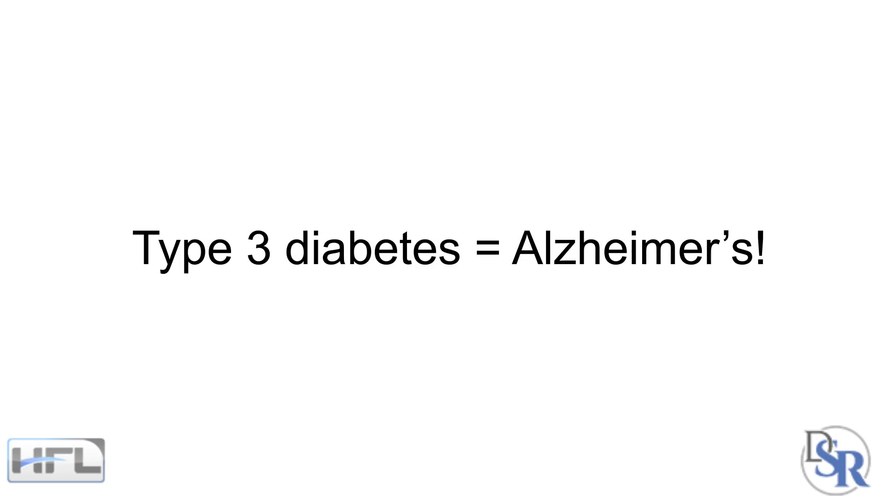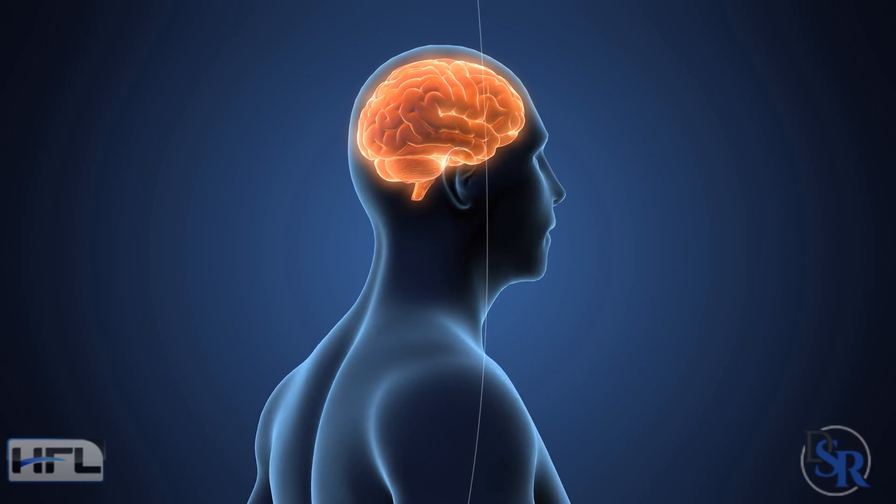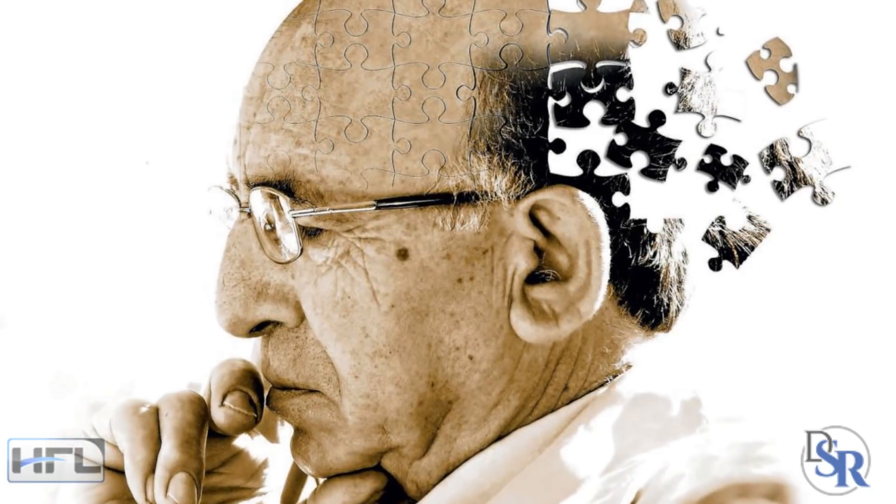So now comes type 3 diabetes for Alzheimer's, which is currently not widely accepted yet. It's a more specific form of diabetes for the brain - dementia, memory loss, and Alzheimer's disease.